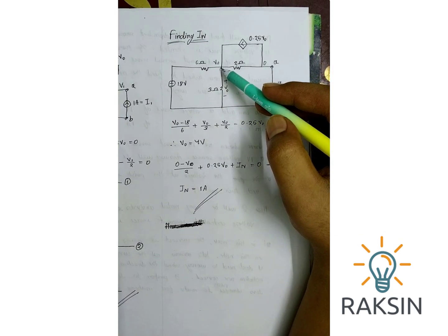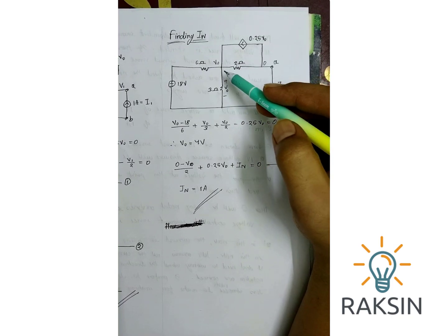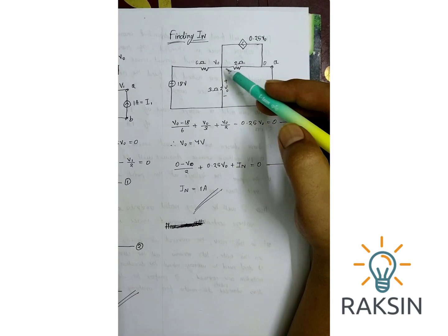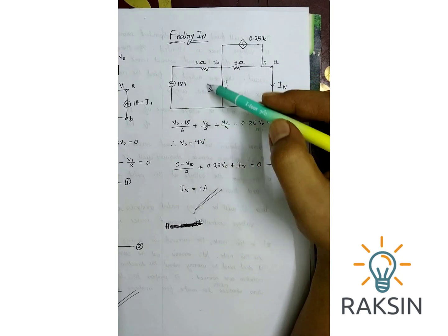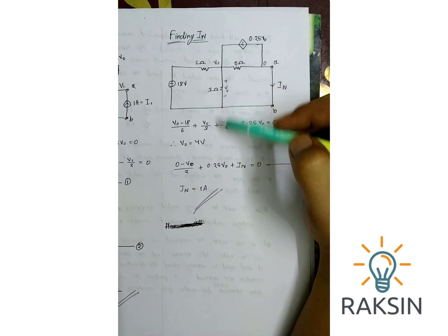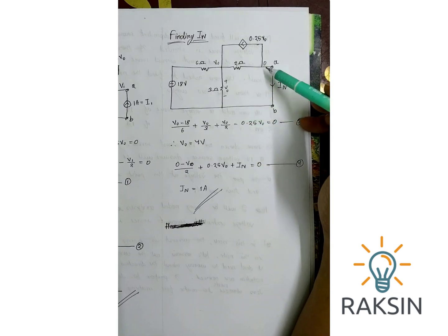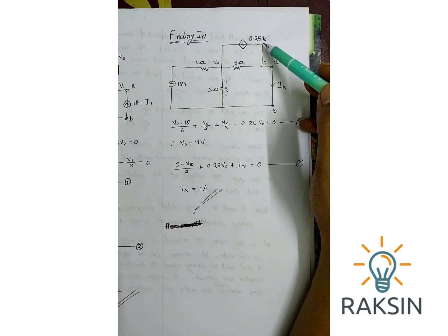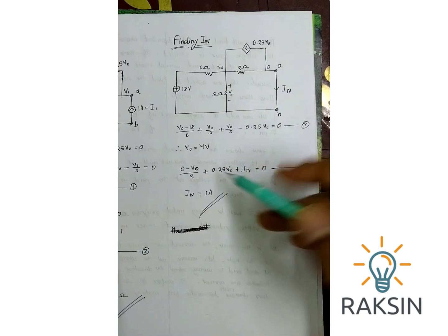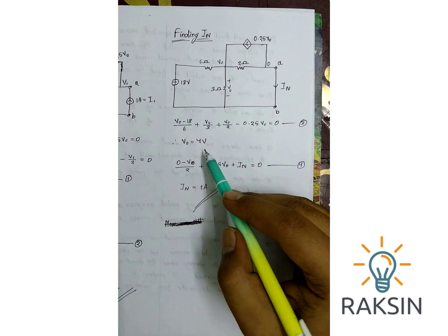In this point again I assumed all the currents are going out. So V0 minus 18 volt divided by 6 is this current. This current is V0 minus 0 by 2, and this is minus 0.25V0. So we find V0 equal to 4 volt.